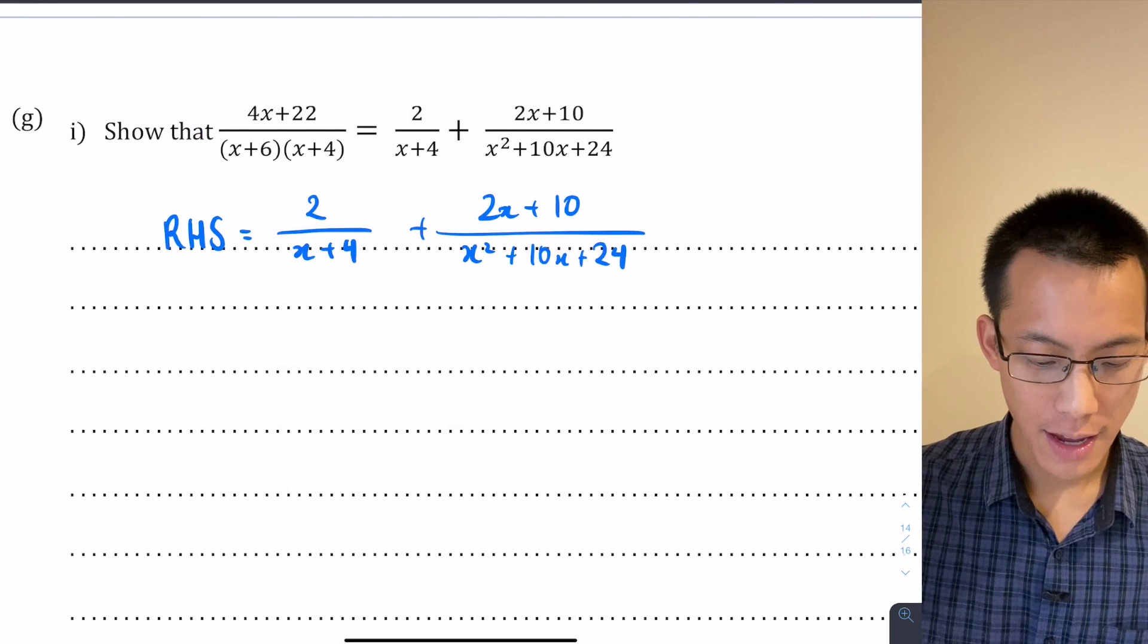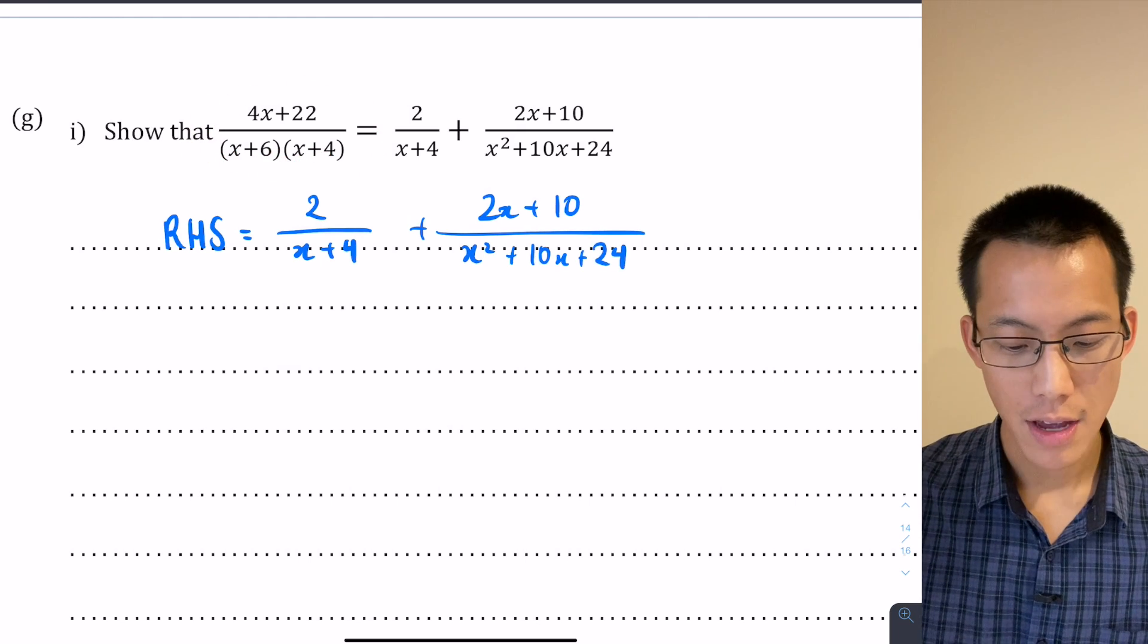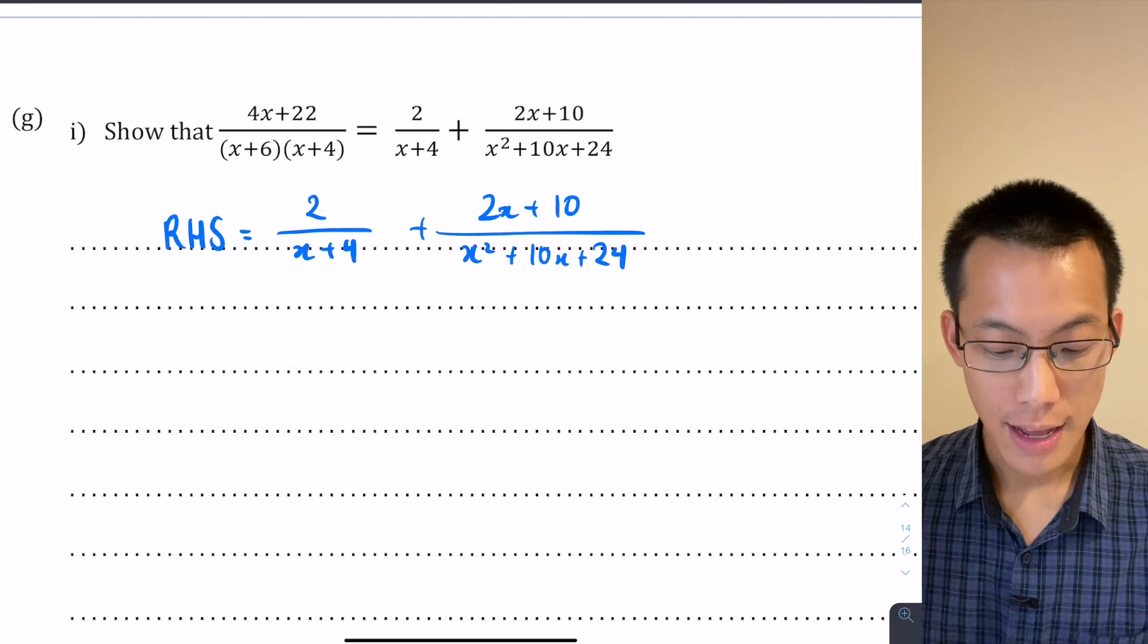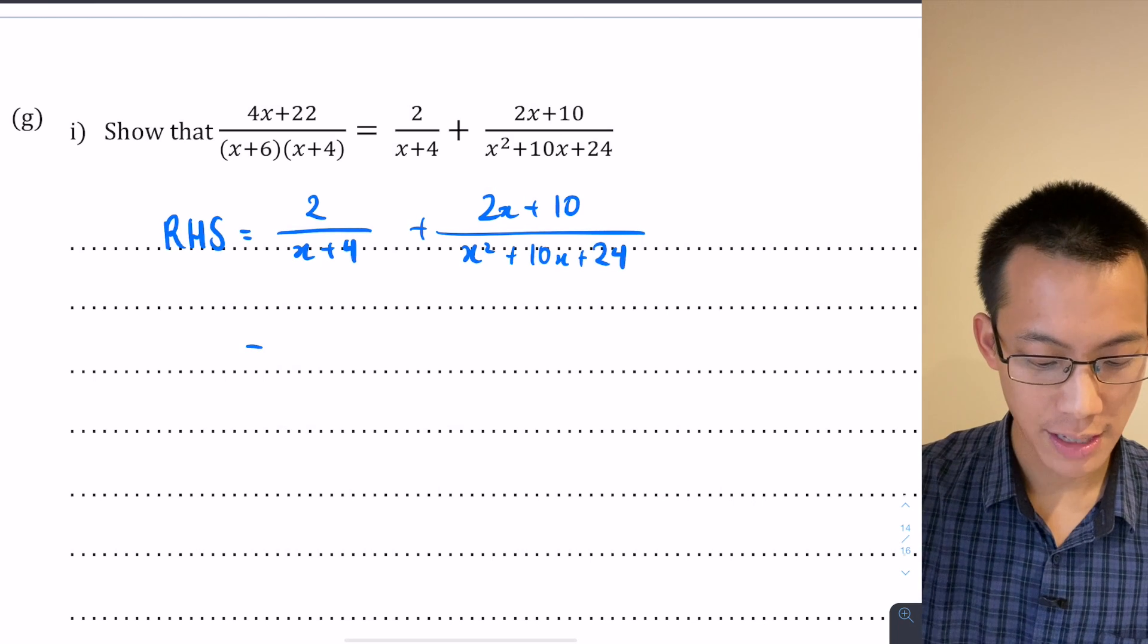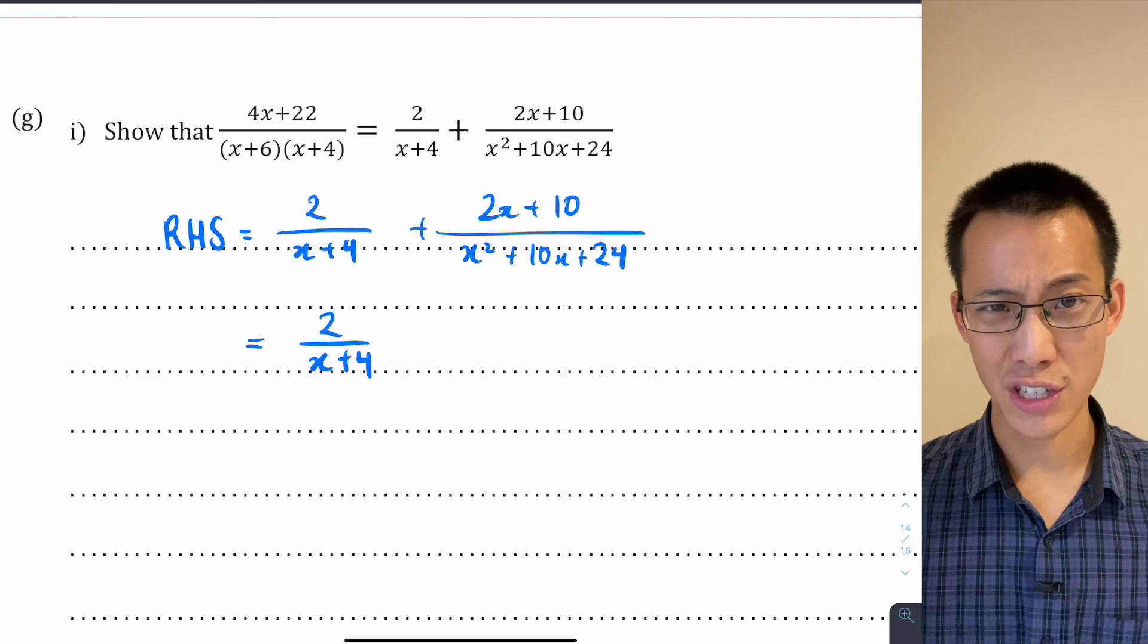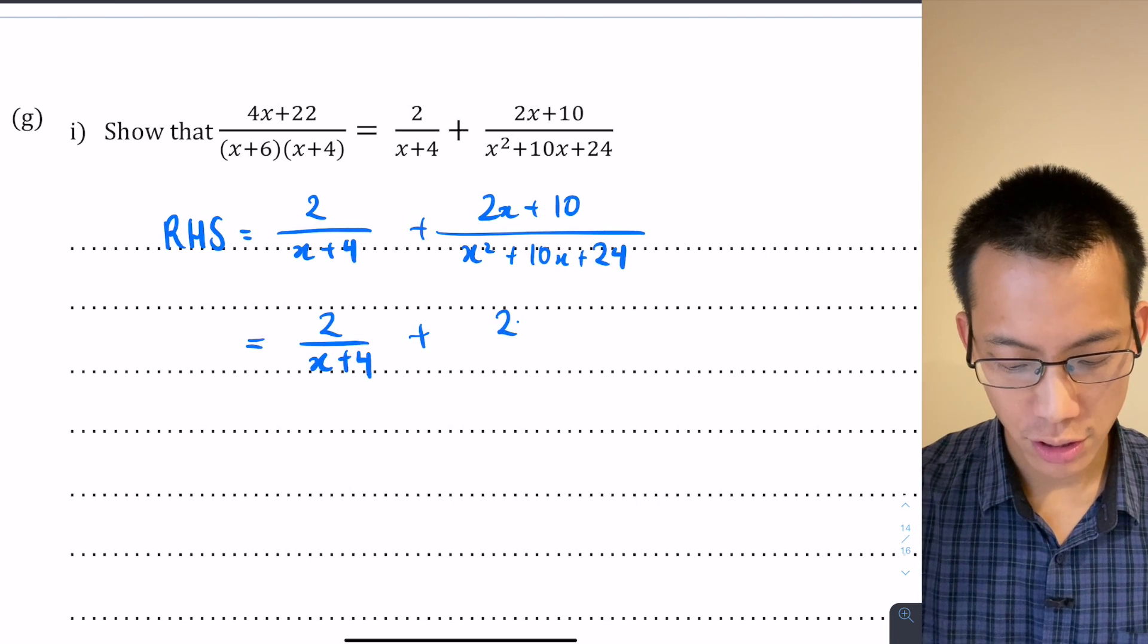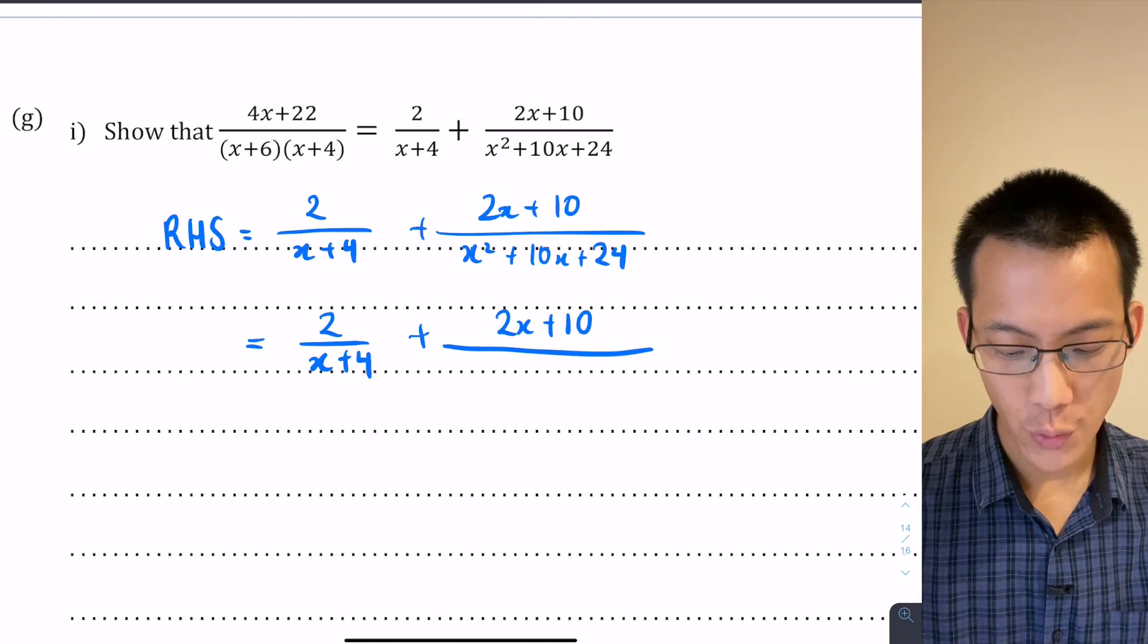I notice that the left hand side is a single fraction and the bottom has been factorized. So what that suggests to me is that the two fractions I've just written on the right hand side need to be, number one, factorized, and number two, combined into one fraction. Let's have a go at that. There's not much to factorize with this left hand fraction, so I'm just going to leave it for a brief moment.